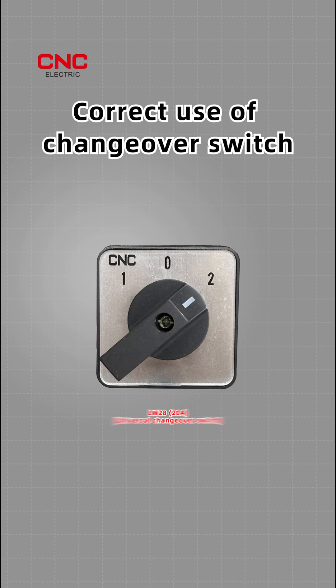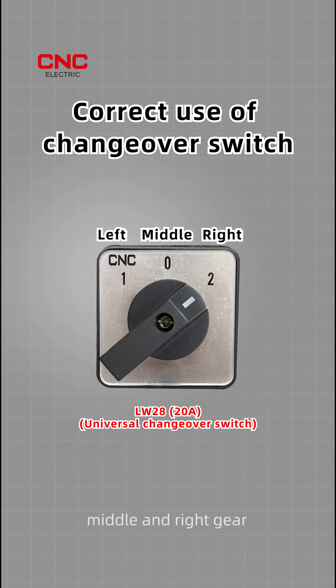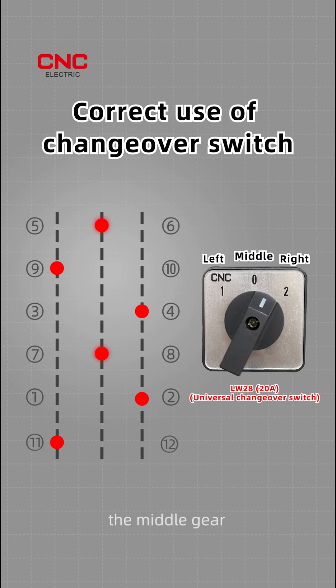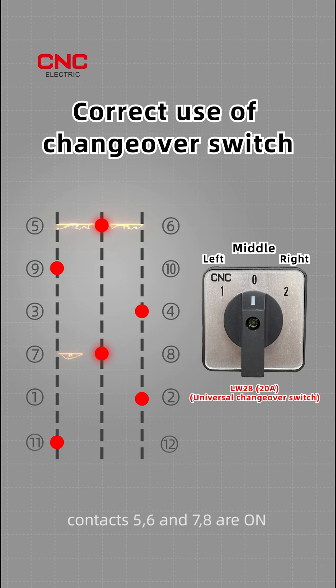This is the three-gear changeover switch with left, middle, and right gear. There are two red dots in the middle gear. When the switch is turned to the middle gear, contacts 5, 6 and 7, 8 are on, available as manual mode.